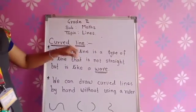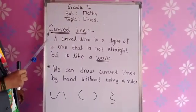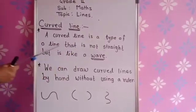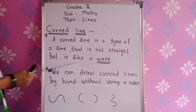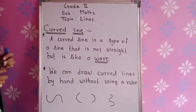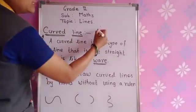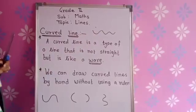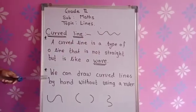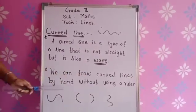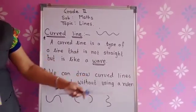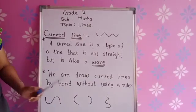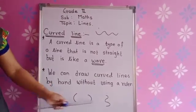Now we are going to learn about curved lines. A curved line is a type of line that is not straight — it is like a wave. Sea waves like this. In a drawing book you draw those waves — these are all curved lines. The second point is we can draw a curved line by hand without using a ruler, unlike straight lines where we use a ruler.